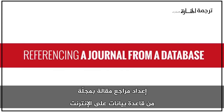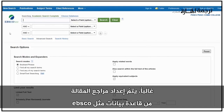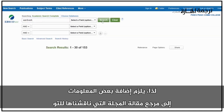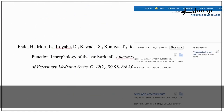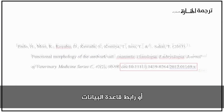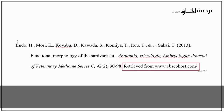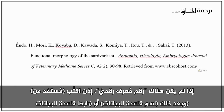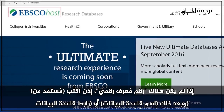When referencing a journal article from an online database, in most cases it will be retrieved from a database like EBSCOhost. You need some additional information added to the standard journal article reference. After the standard reference, you need to add a DOI number or the URL of the database. If available, the DOI number is preferred and will be found along with the other publication information in the database. If no DOI number is available, put 'Retrieved from' followed by the name of the database or the URL.